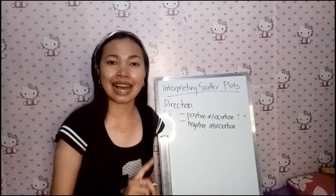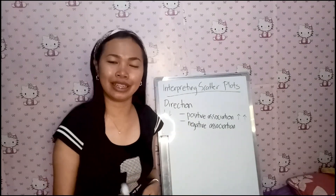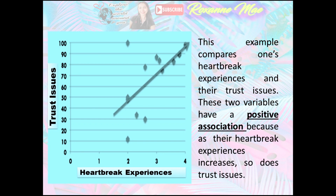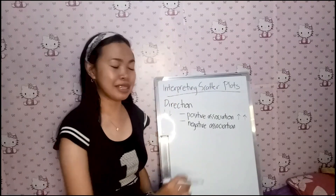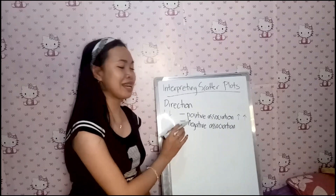Let us have an example. This example compares one's heartbreak experiences and their trust issues. These two variables have a positive association because as their heartbreak experiences increase, so do their trust issues.